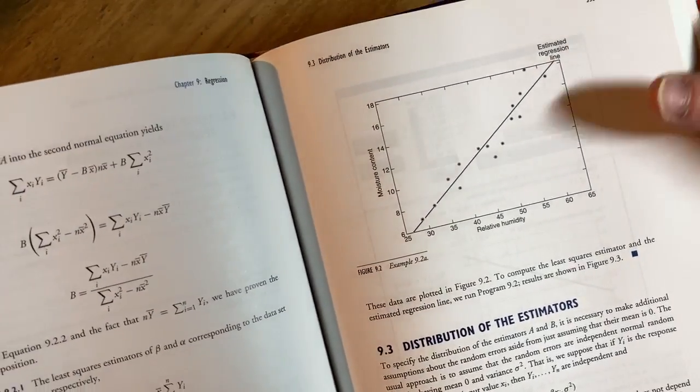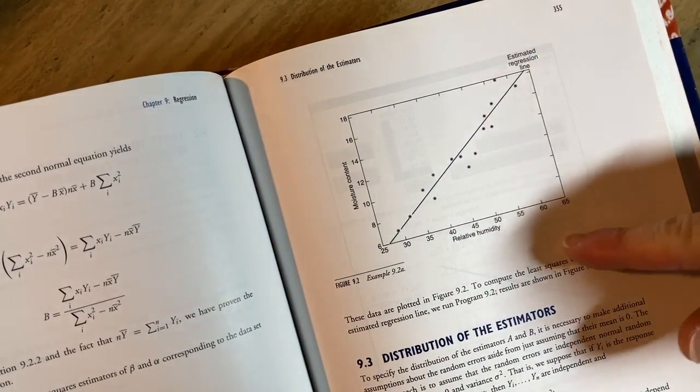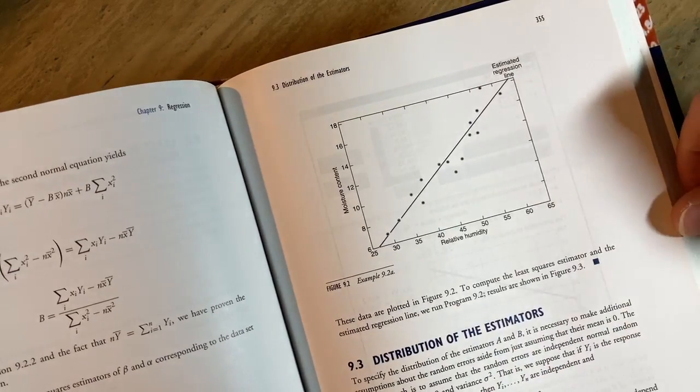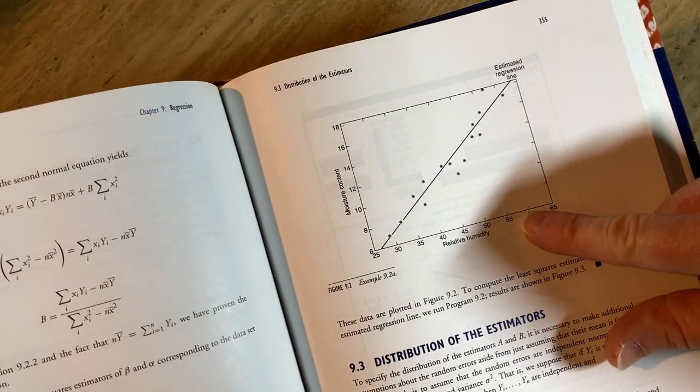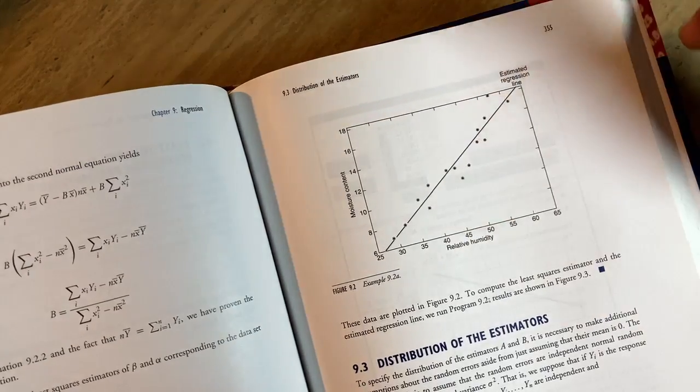And so basically what you could do here is as long as your data roughly fits the model, you might say, okay, what's going to happen when the X value here, this is the X axis is 57. So you just take the 57 and you basically plug it into the equation of the line and that predicts the Y values.